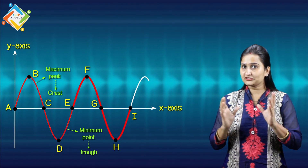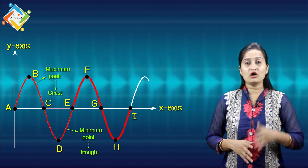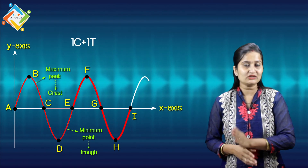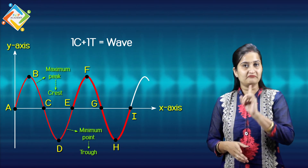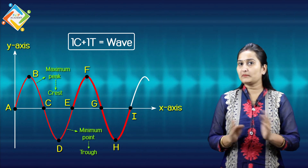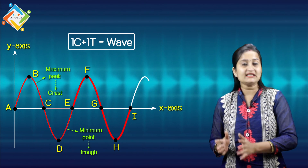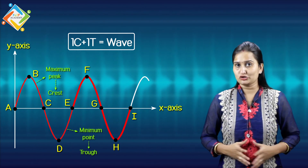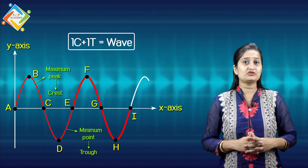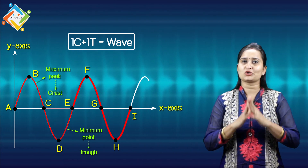If we talk about the first wave, how is it formed? By the combination of one crest and one trough. That means one crest and one trough together give you one wave, which is also called one cycle. One peak plus one valley equals one wave, and that is also called a cycle. This is very important to remember.